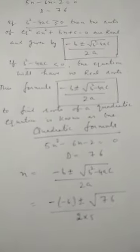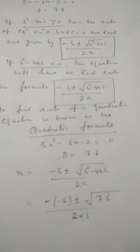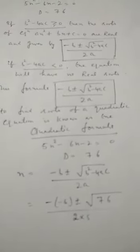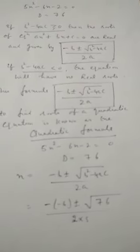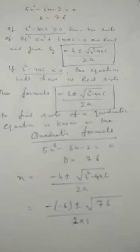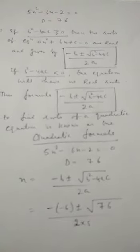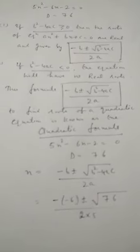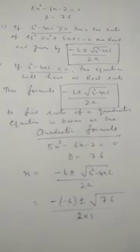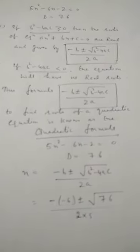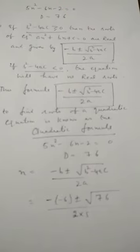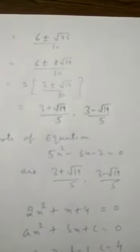For the equation 5x² minus 6x minus 2 equals 0, the discriminant was 76. So x equals minus b plus or minus root of (b² minus 4ac) divided by 2a. Substituting the values: minus b is minus of minus 6, so minus minus becomes plus. We get 6 plus or minus root 76 divided by 2 into 5, which gives x equals 6 plus or minus root 76 divided by 10.